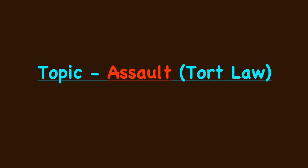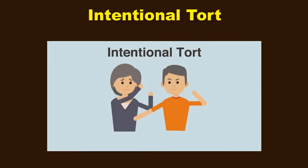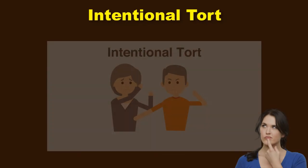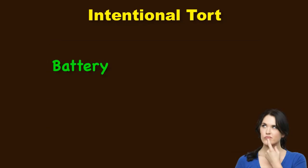Hello everyone. In this video we will be discussing tort law. As we have seen in our previous video, what is the meaning of tort law, what are the sources of tort law, and what are the kinds of harm considered under tort. We have already discussed what is negligent act, what is intentional act, and what is strict liability. Then we started discussing intentional tort, and we discussed battery. In this video we will discuss assault, the second type of intentional tort.